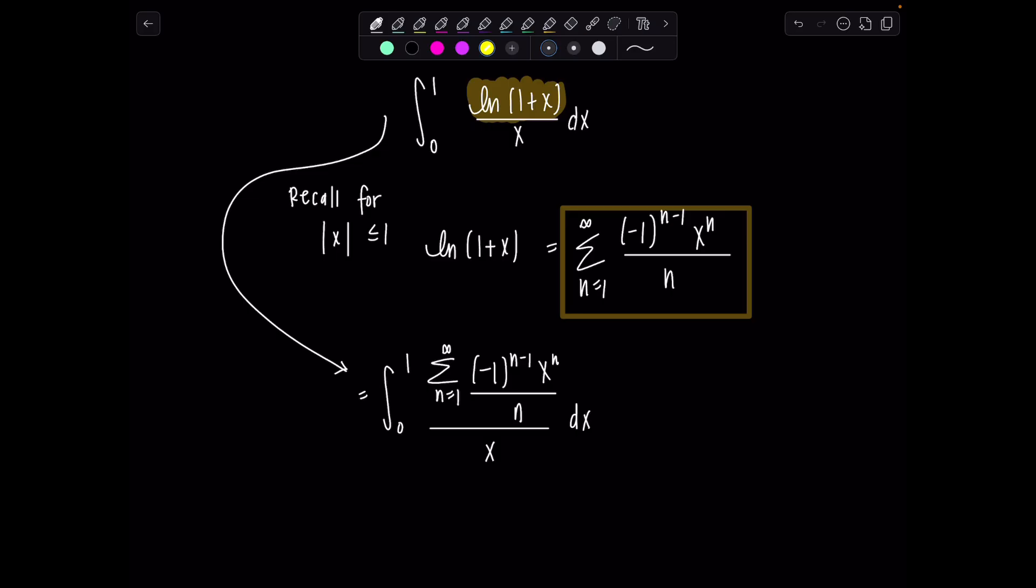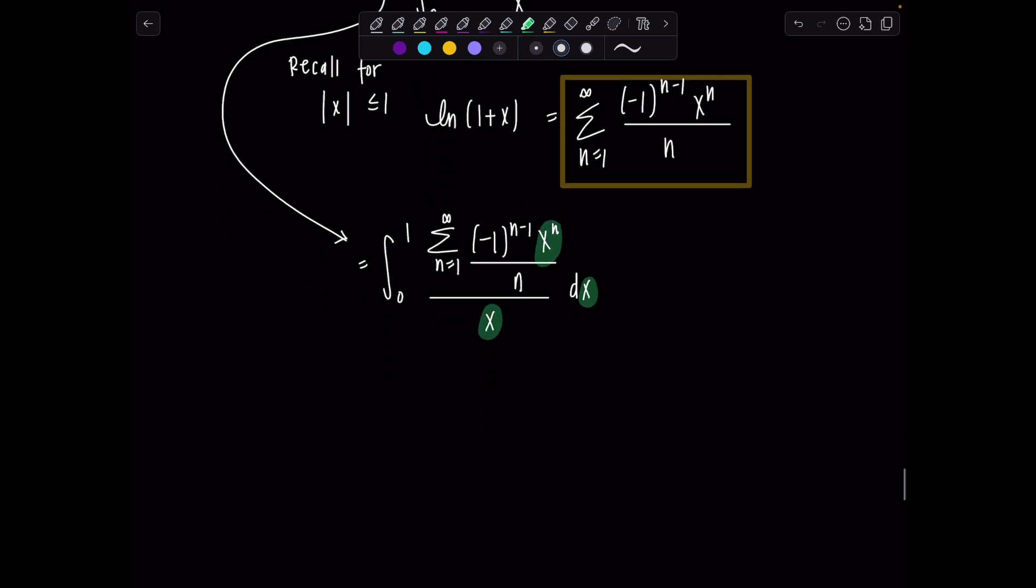No panic attacks, no meltdowns, just focus on the fact that we're integrating with respect to x. I have x to the n here and x in the denominator. I'm just going to use my laws of exponents and simplify. Everything else, just treat it like a constant. So we have the sum, n equals 1 to infinity, negative 1 to the n minus 1. Now I'm going to have x to the n minus 1, and then this over n just will stay here, dx.